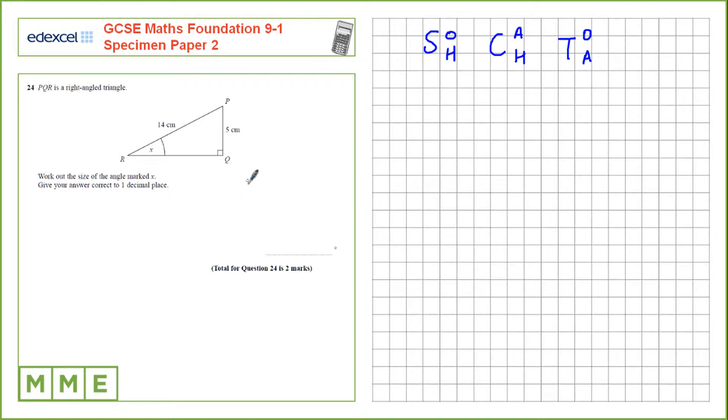The first thing we do in a trig question is we need to label the sides. So here this is the opposite side to the angle, and this is the hypotenuse, the longest side.